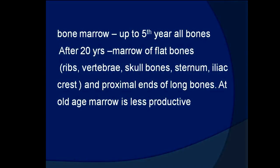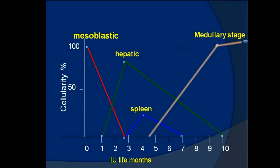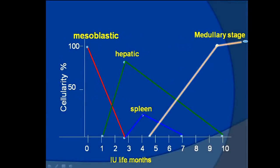In bone marrow, after the age of five years erythropoiesis occurs in all bones, while after 20 years it occurs in the marrow of flat bones such as ribs, vertebrae, skull bones, sternum, and iliac crest. At old age, marrow is less productive. A graphical representation shows the mesoblastic, hepatic, splenic, and medullary stages.